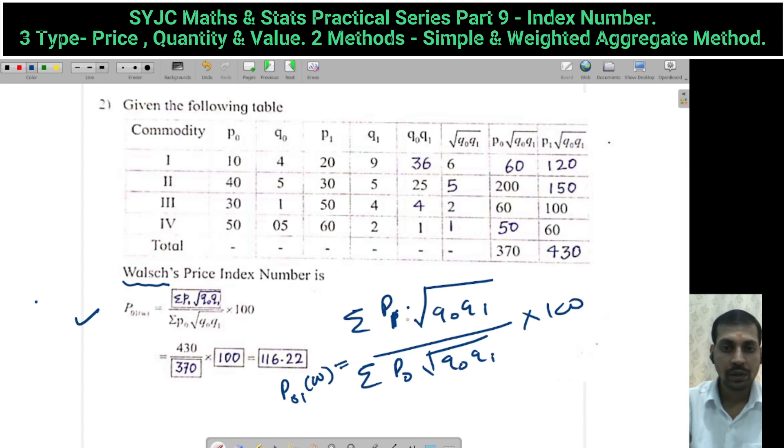Calculate summation P1 under root Q0Q1, that is 430 divided by 370 into 100. We get the answer.